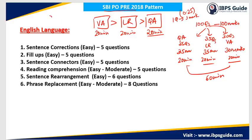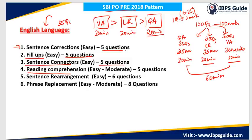Now if you talk about the types of questions asked in English language — total 30 questions and 30 marks — questions were asked from sentence correction for five marks, fillers were also asked for five questions, and sentence connectors were asked for five questions. Reading comprehension was not story-based but was related to either economy or passages related to the old people of Japan and their economics.